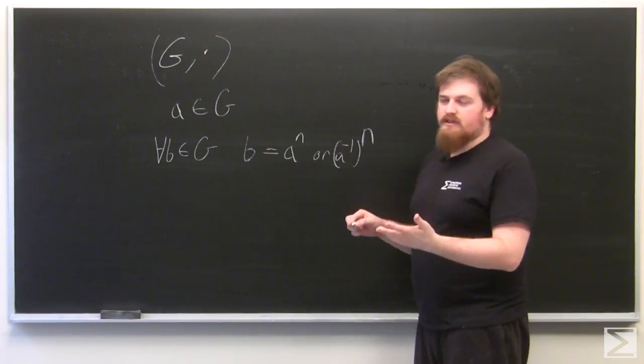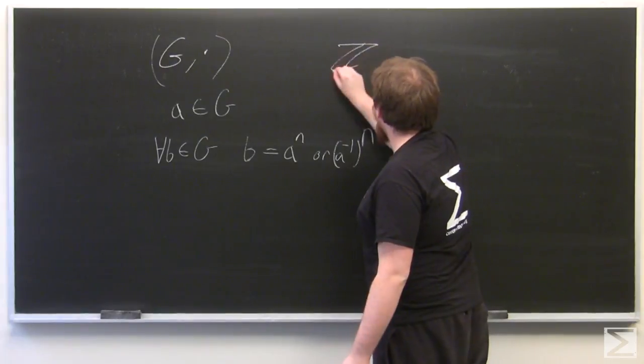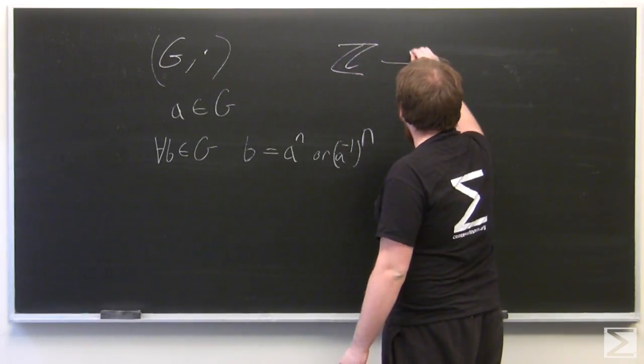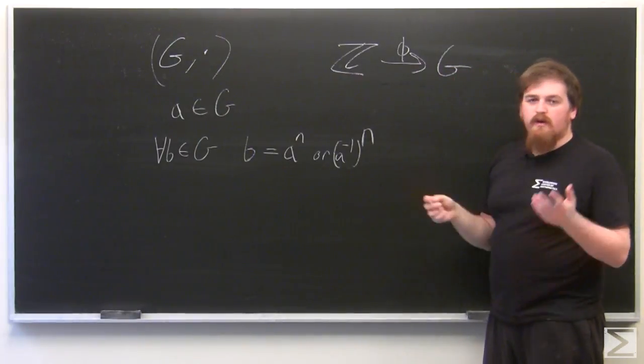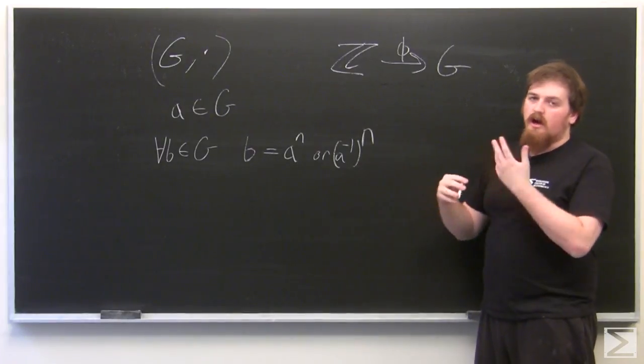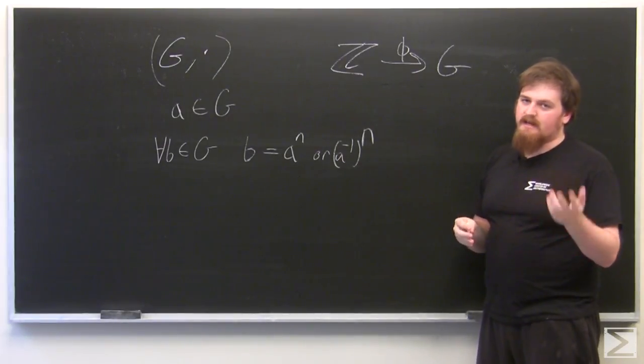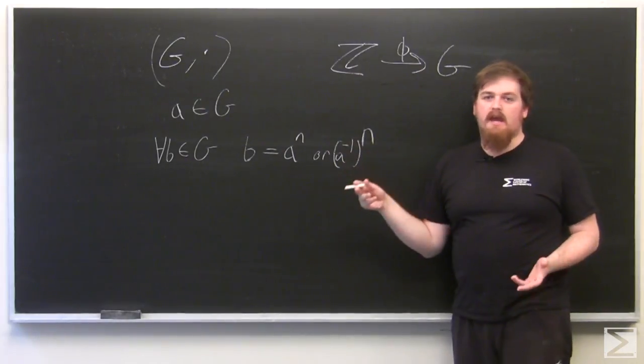This is equivalent to the condition that there is a surjective homomorphism from the integers to the group G, in which the element 1 in the integers, which is not the identity because the integers are under addition, so the identity there is 0, such that the element 1 gets sent to the privileged element A.